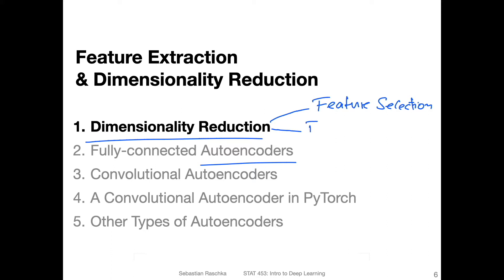There is also feature extraction. The difference between feature selection and feature extraction is that in feature extraction, we don't necessarily keep the original features. Feature extraction would usually be a combination of the features — some linear or nonlinear transformation. I will show you an example of that in this video. This is also the concept that underlies auto encoders, so auto encoders can be thought of as feature extraction algorithms.